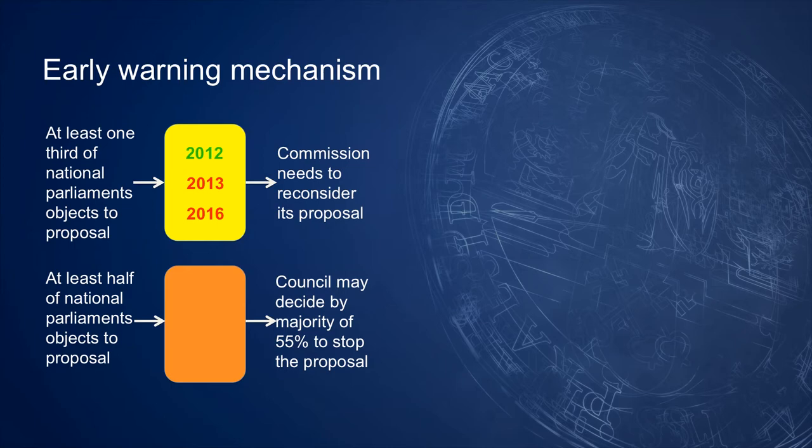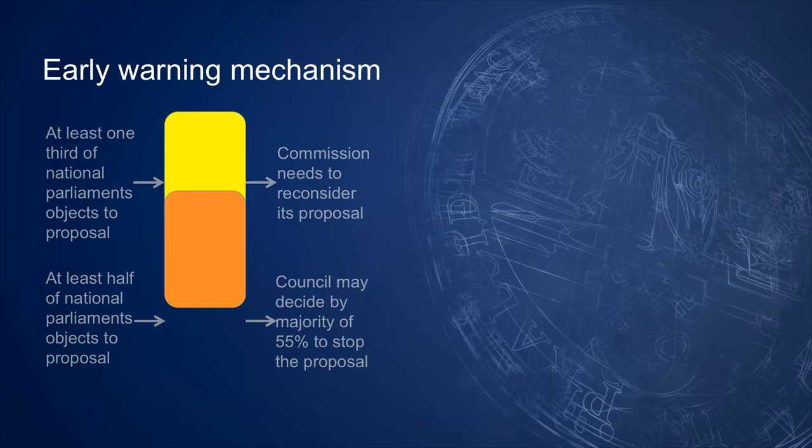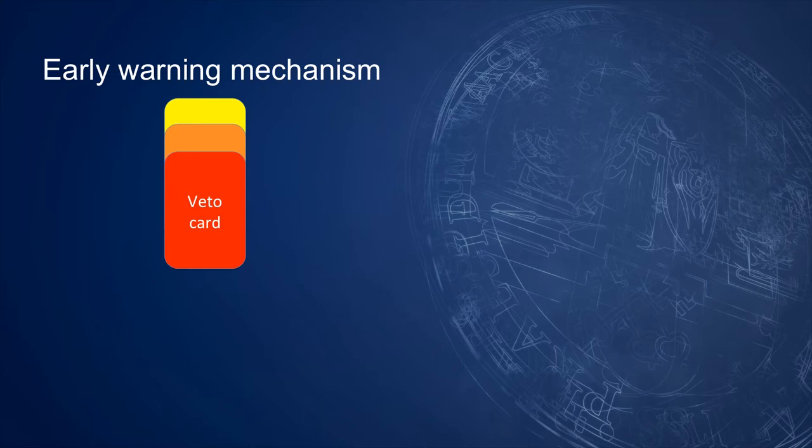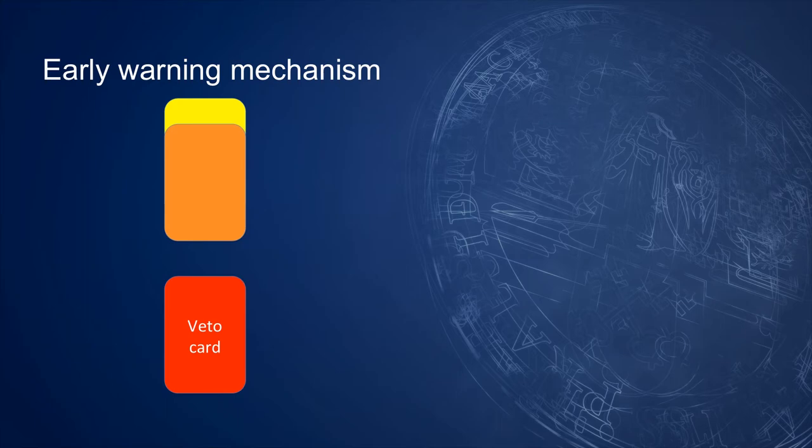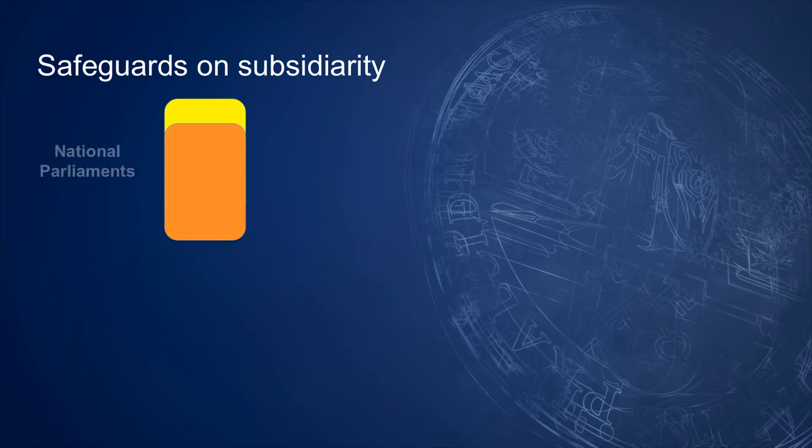There are calls to further strengthen the role of national parliaments in the legislative process by, for instance, providing them the possibility of a veto or a red card. Such a card was initially foreseen in the failed draft constitution for Europe. It reappeared in a slightly different way in the deal between the UK and the EU in the run-up to the Brexit referendum. Voting for leave? This deal is, at the moment, off the table.